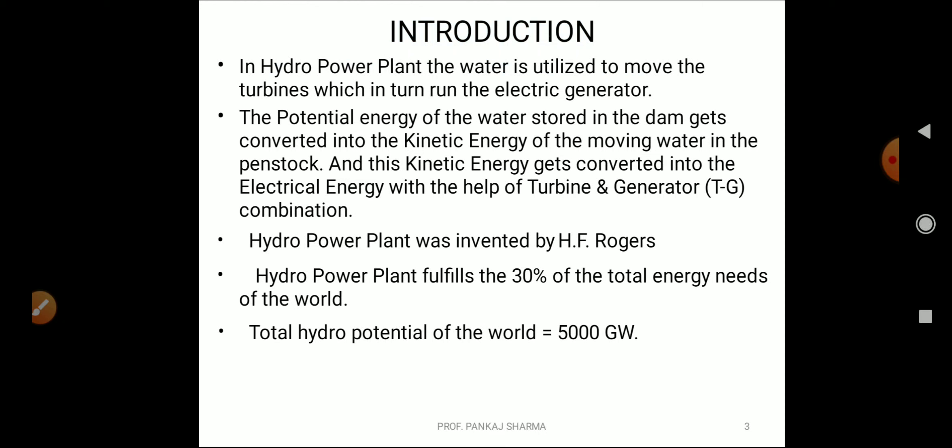In hydropower plant, water is utilized to move the turbines which in turn run the electric generator. The potential energy of water stored in the dam gets converted into kinetic energy of the moving water in the penstock, and this kinetic energy gets converted into electrical energy with the help of turbine and generator set, also called TG combination. Hydropower plant was invented by H.F. Rosers. This plant fulfills 30 percent of the total energy needs of the world. Total hydro potential of the world is 5000 gigawatts.